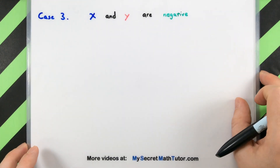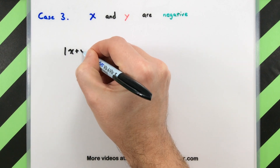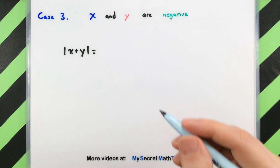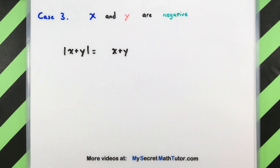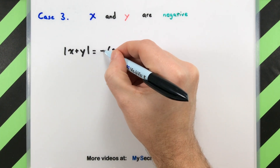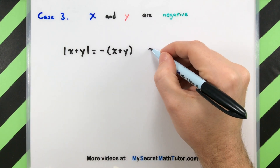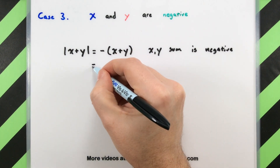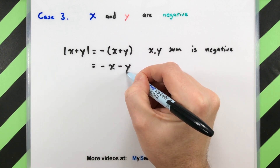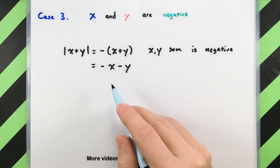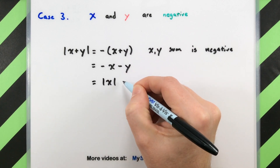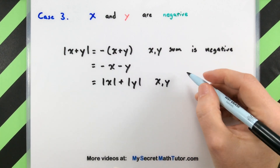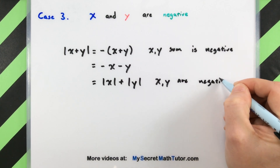Very similar to before — this time x and y are both negative numbers. Since x and y are negative, their sum is also negative. By the definition of absolute value, we take the absolute value of a negative number by putting a negative sign in front, so: negative of (x plus y). We then distribute that negative sign to each term, giving negative x plus negative y. Since x and y are individually negative, we can package these up using the absolute value definition, giving us absolute value of x plus absolute value of y.